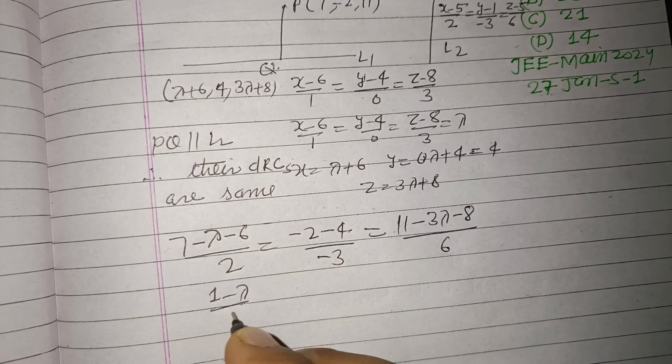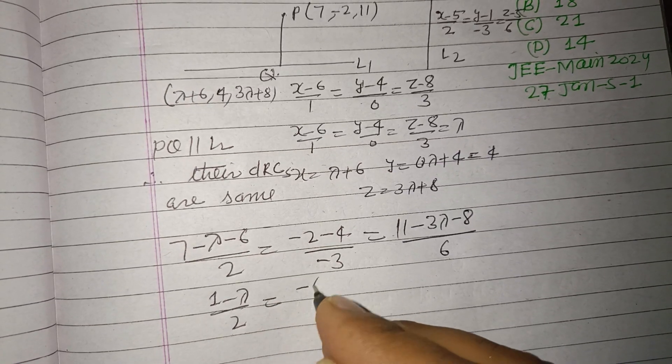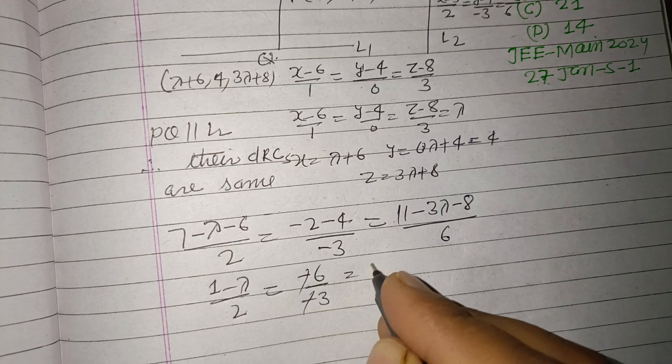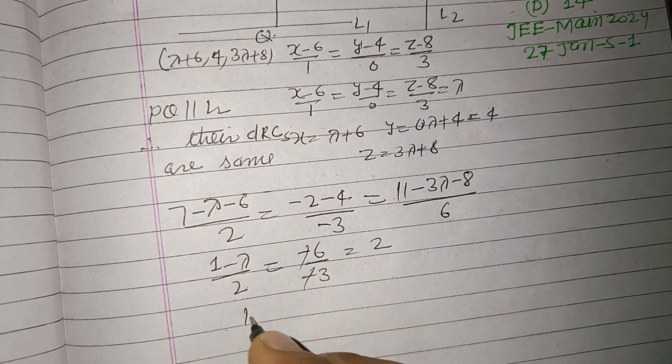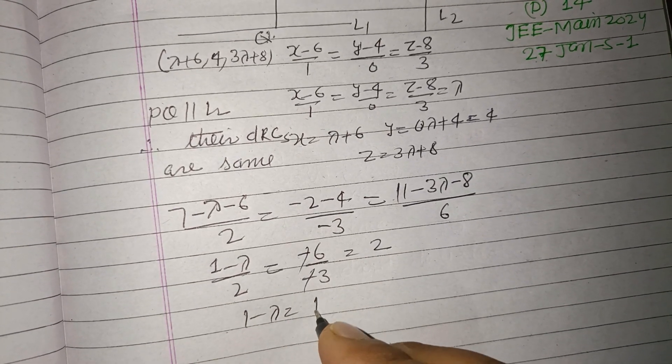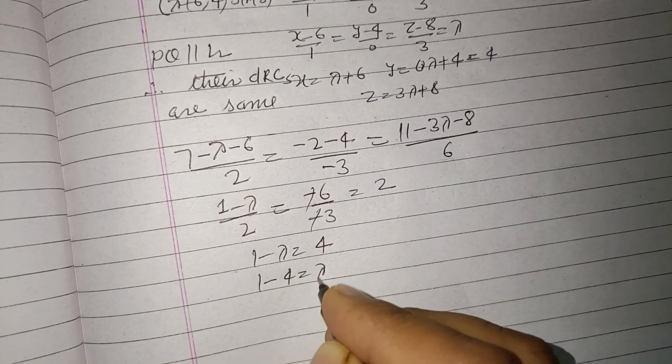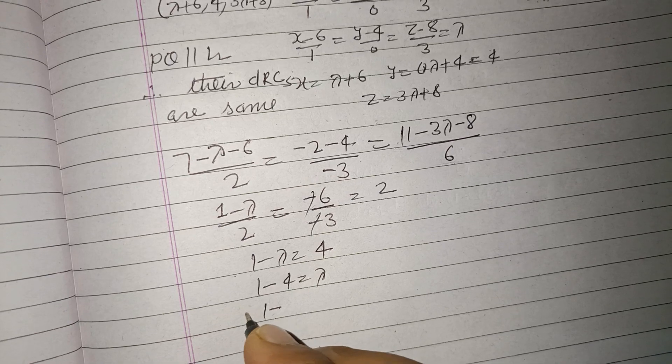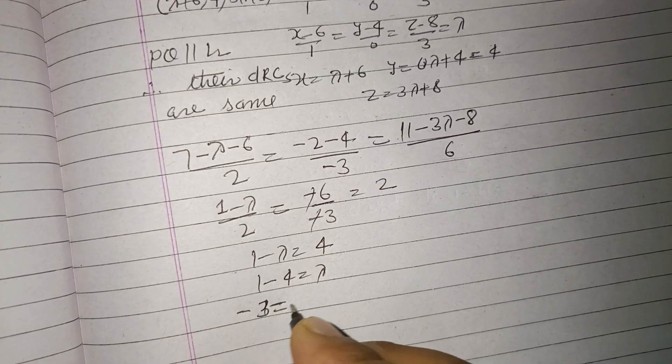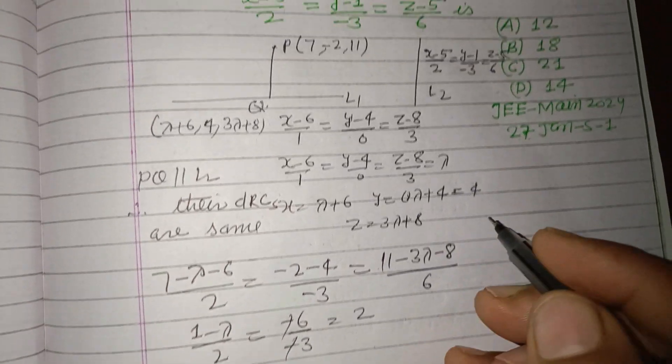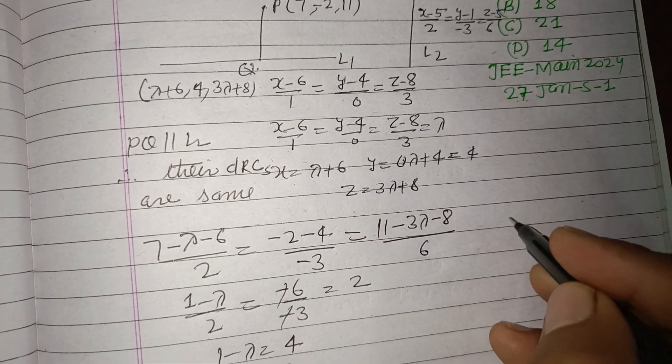So 1 - λ = 2×2 = 4, and 1 - 4 = λ, which means λ = -3. Therefore, point Q,